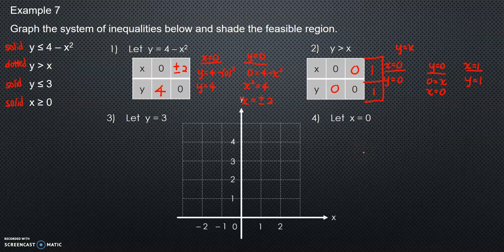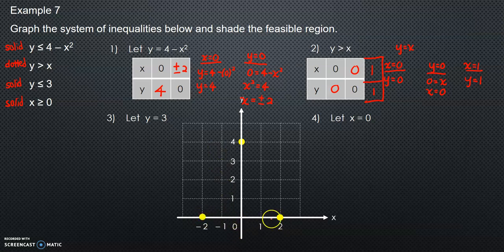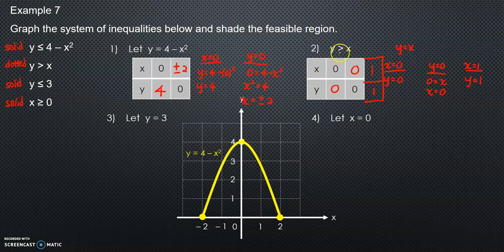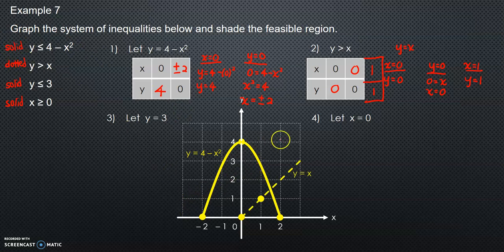Now we plot the graph. For the quadratic: first point is (0, 4); when y is 0, x is plus or minus 2. Since this involves x squared, we draw a curve. For y equals x (dotted line): first point is (0, 0), second point is (1, 1). For y equals 3: a solid horizontal line. For x equals 0: a vertical solid line on the y-axis.